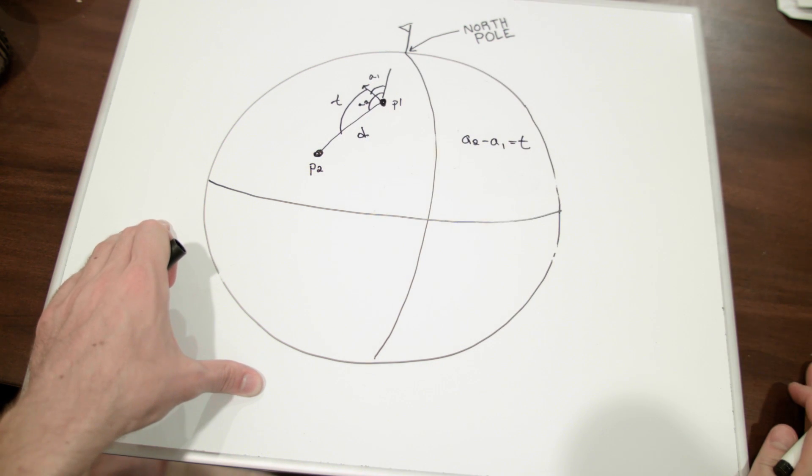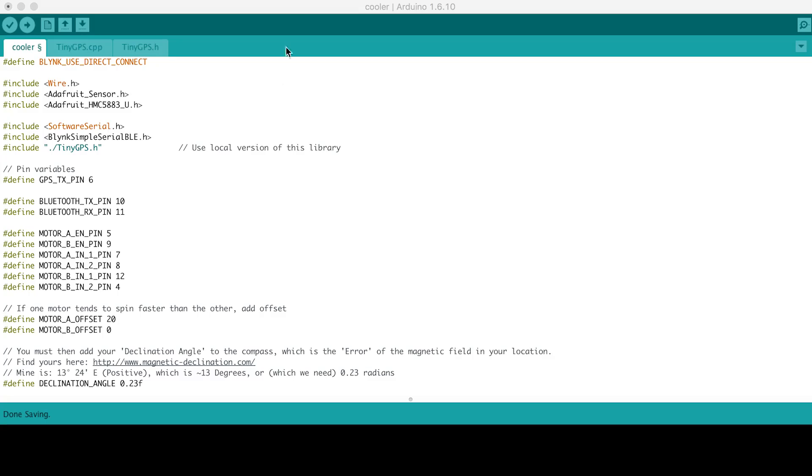So if I know the distance in the turn, I can drive my cooler towards the phone. The code for this project can be found on our GitHub page. It looks something like this.